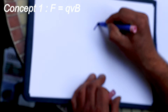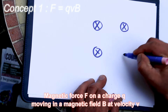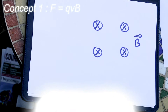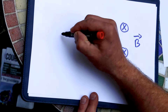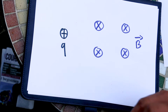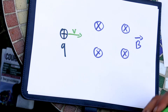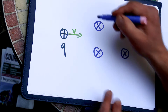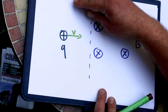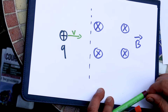Let's consider a magnetic field B directed towards the page. Now let's consider a positive charge Q. This positive charge Q has a speed V. Now let's consider that the magnetic field starts here. Before it enters the magnetic field the charge is going straight. But as soon as it enters the magnetic field it will feel a magnetic force.